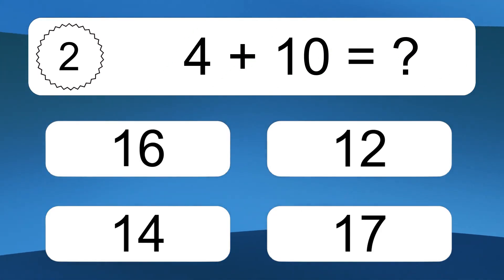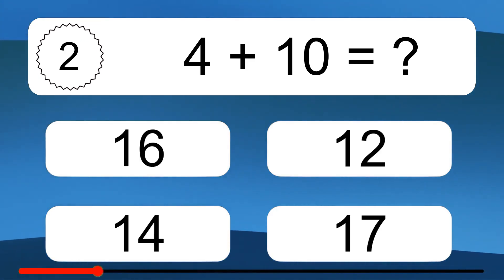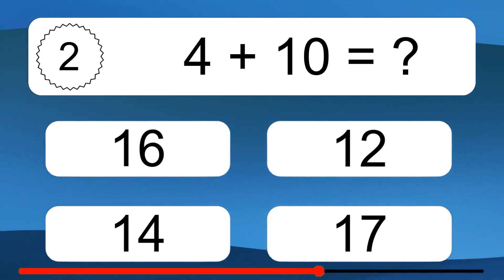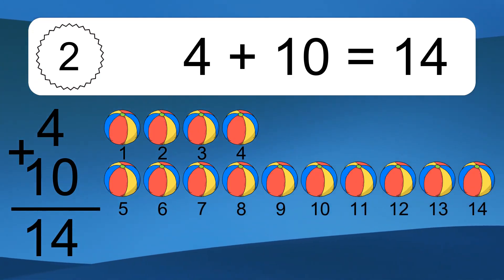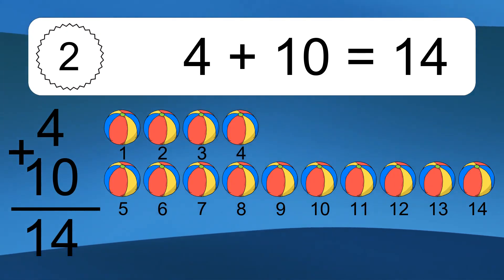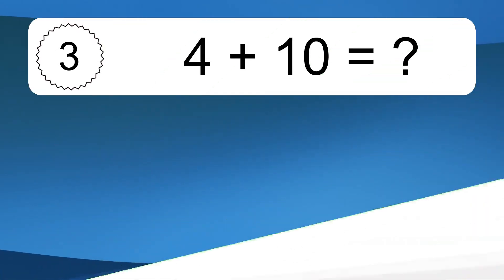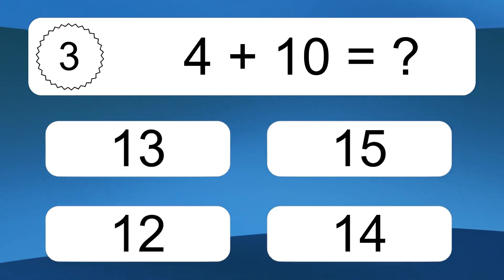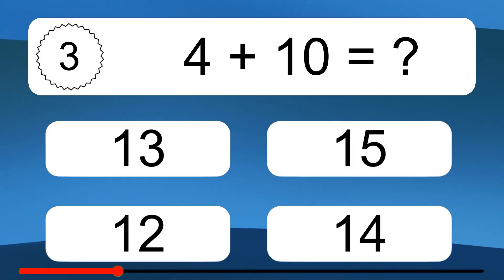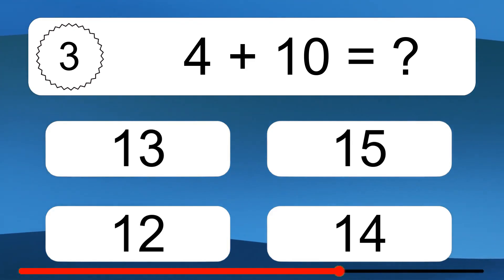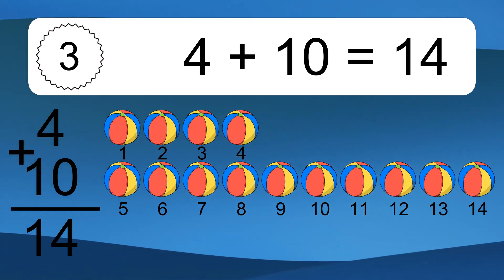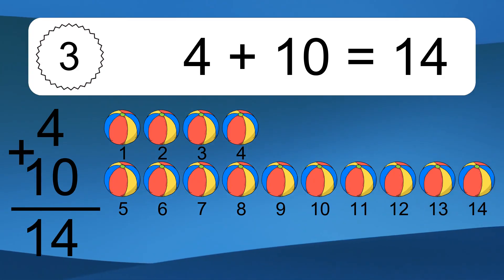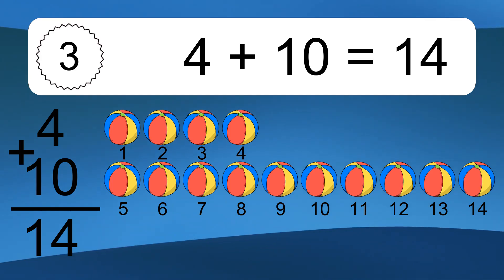4 plus 10 equals what? 4 plus 10 equals 14. Let's count it: 1, 2, 3, 4, 5, 6, 7, 8, 9, 10, 11, 12, 13, 14.